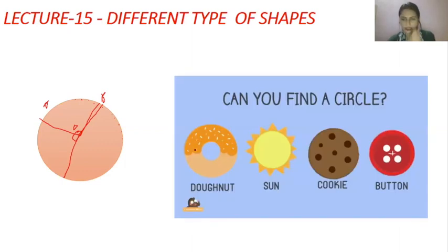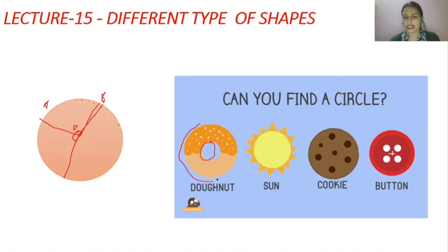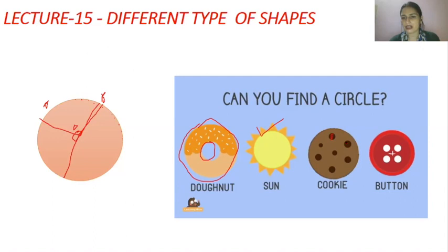Now let's relate the circle to daily life. This is a donut — the outer shape is also a circle. The sun is also a circle. A cookie is also a circle. In this shape, there are many circles: one, two, three, four, five, six, seven, and one big circle.